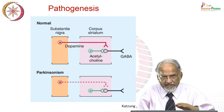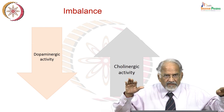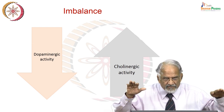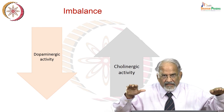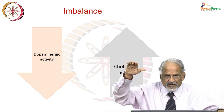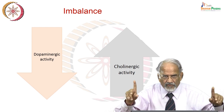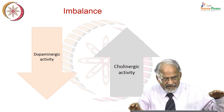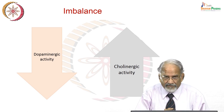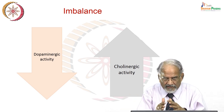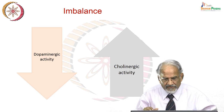The strategy of treatment is to correct this imbalance. Since dopaminergic activity is decreased, the approach is to increase dopaminergic activity. Since cholinergic activity is relatively increased due to loss of inhibition, the approach is to reduce cholinergic activity. So there are two approaches: increasing dopaminergic activity and decreasing cholinergic activity — and a third approach is to apply both together in some patients.